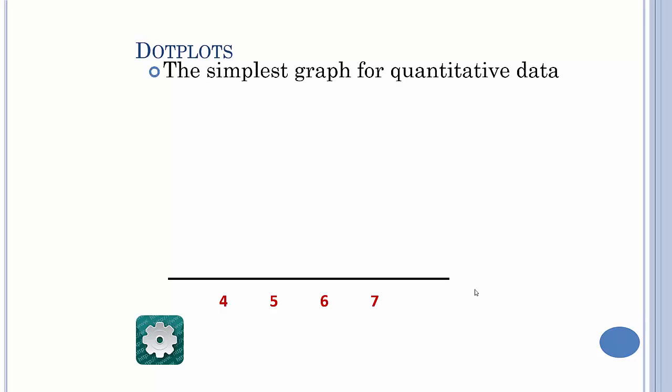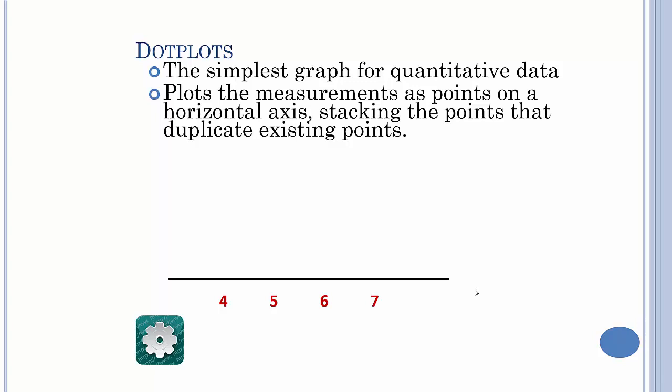Dot plots. Now the simplest graph for quantitative data is a dot plot, and all it is is it counts up how many things you have. You put a dot for every piece of data that falls into that category.